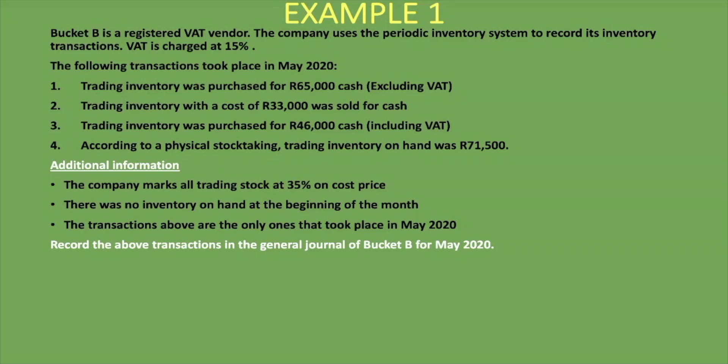Here's an example using the periodic inventory system — the same example as our previous lesson but using periodic instead of perpetual. Bucket B is a registered VAT vendor. The company uses the periodic inventory system to record inventory transactions. VAT is charged at 15%. The following transactions took place in May 2020. The company marks all trading stock at 35% on cost price. There is no inventory on hand at the beginning of the month, and the transactions listed are the only ones that took place in May 2020.